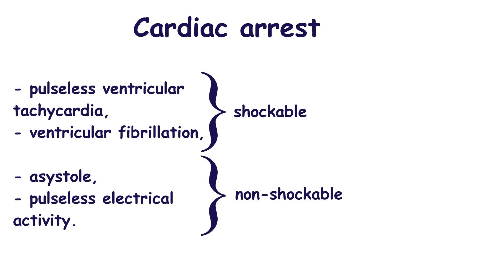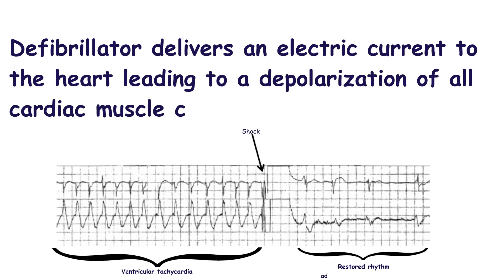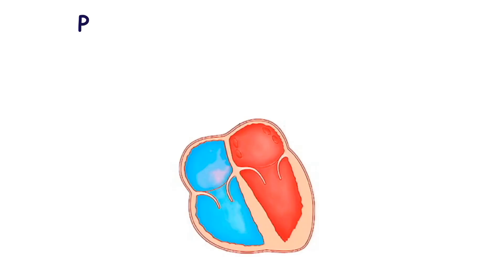In the case of shockable rhythms, a defibrillator should be used. The defibrillator delivers an electrical current to the heart, leading to a depolarization of all cardiac muscle cells that ends the arrhythmia. Then the sinoatrial node restores the normal heart rhythm.